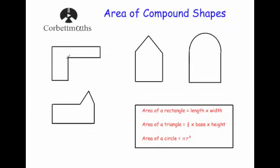Here you can see two rectangles, here a rectangle and a triangle, here a rectangle and a semicircle, and here a rectangle and a triangle. These are all examples of compound shapes.